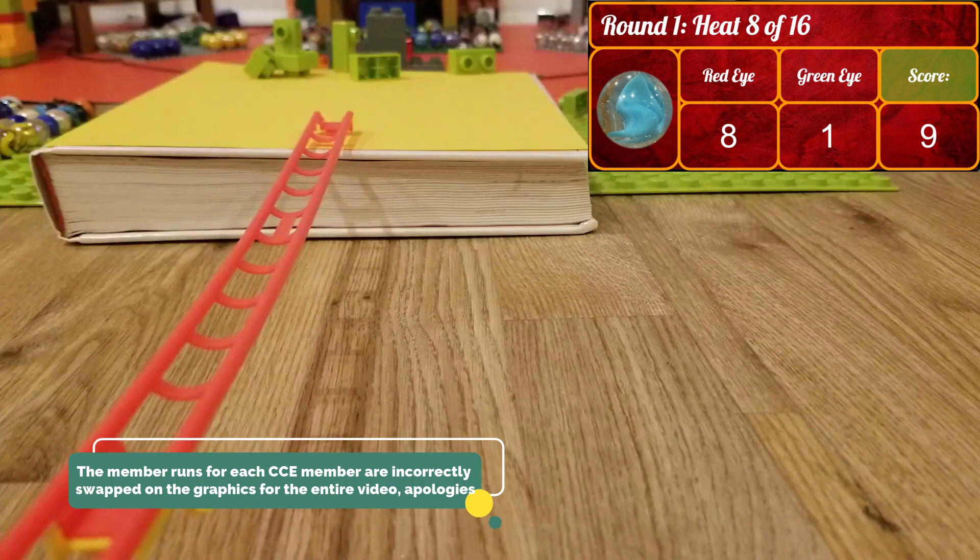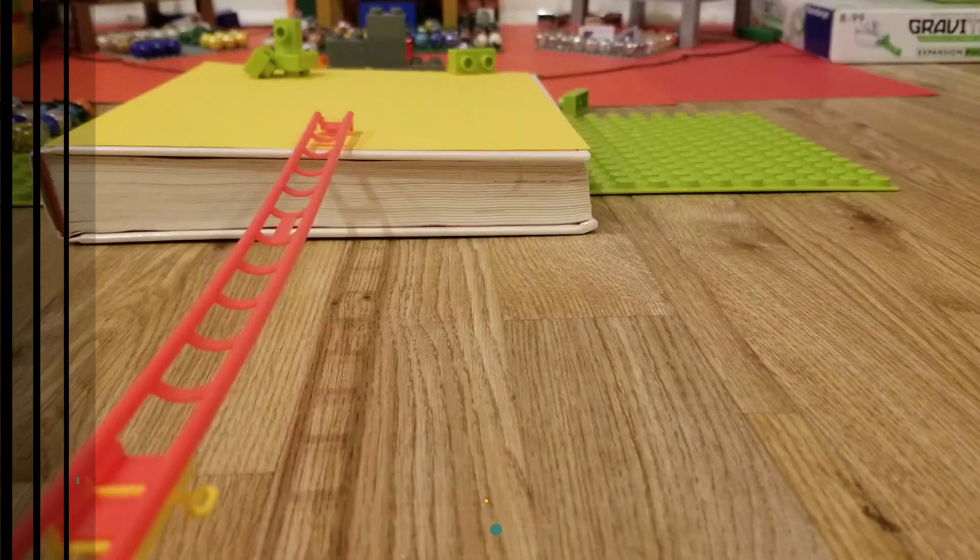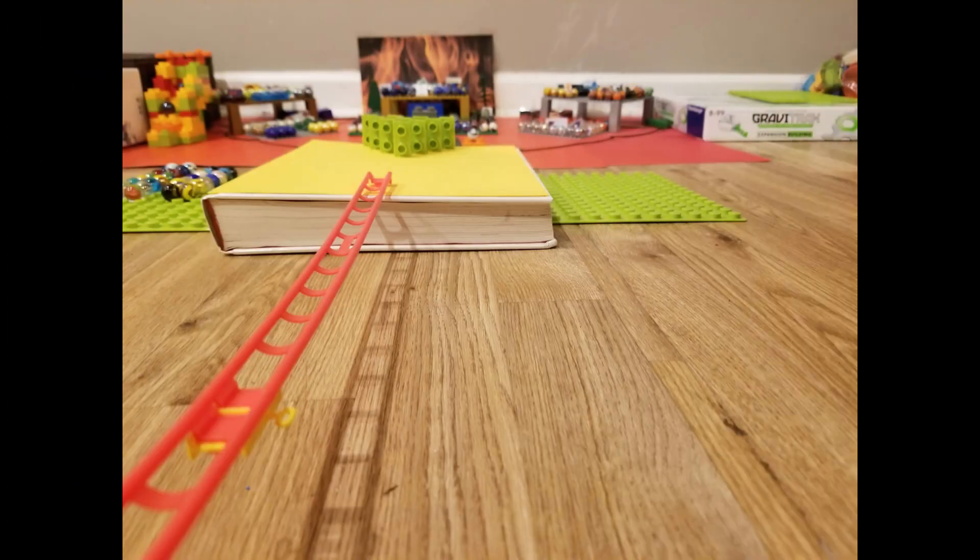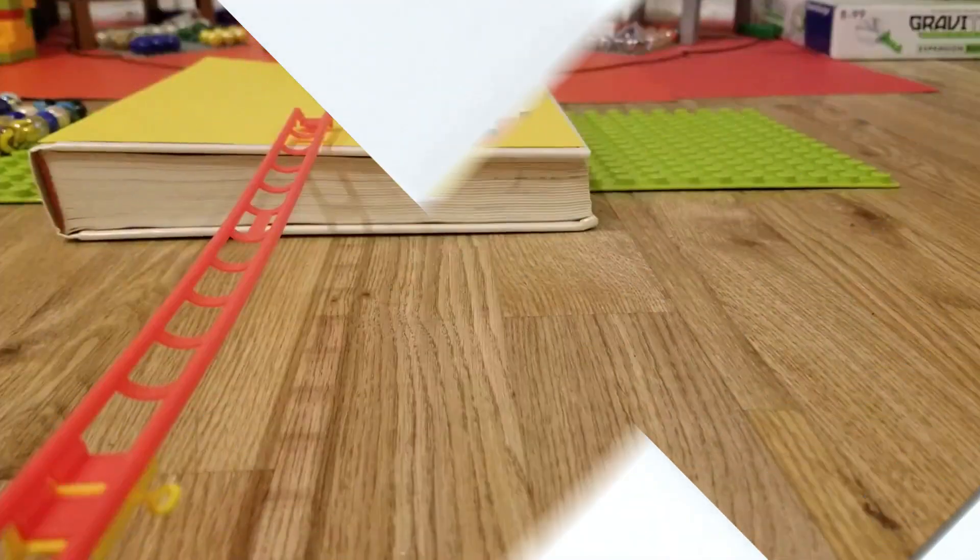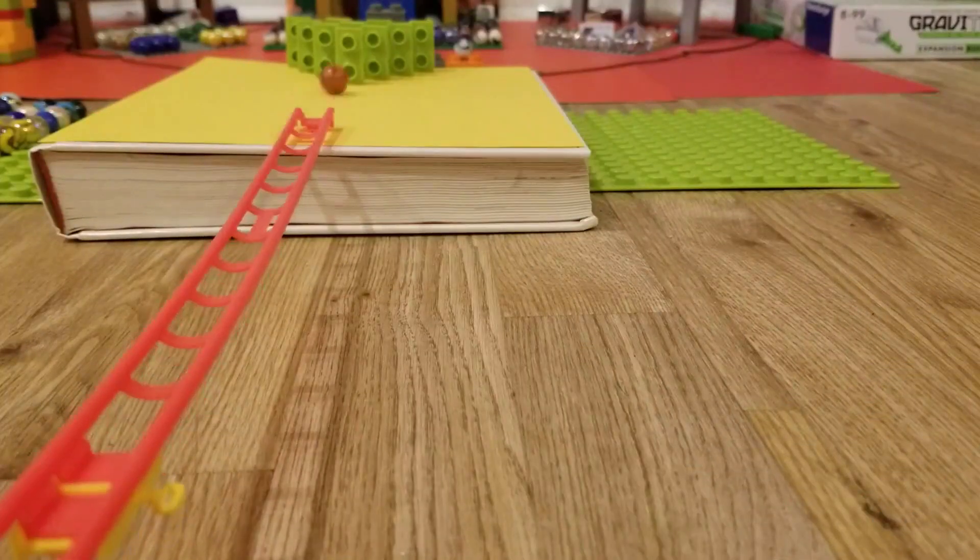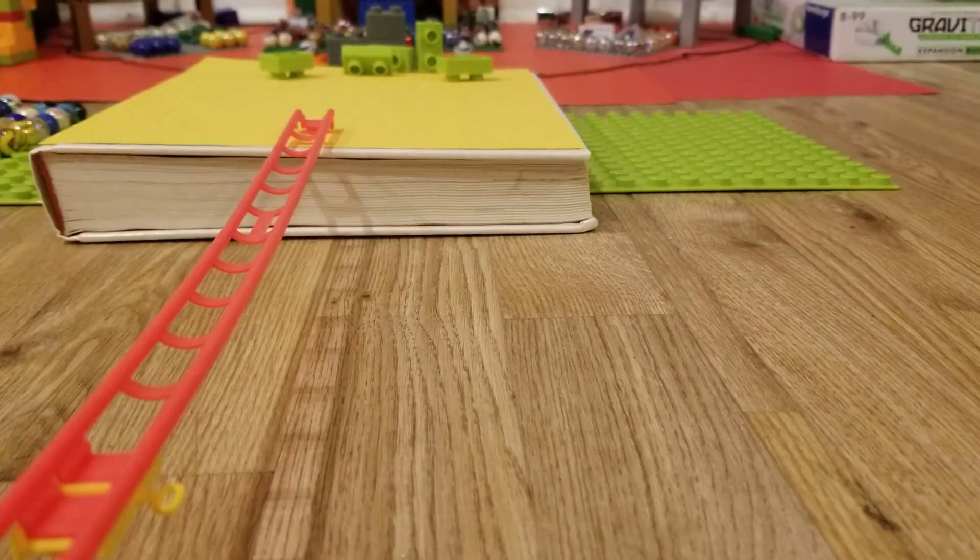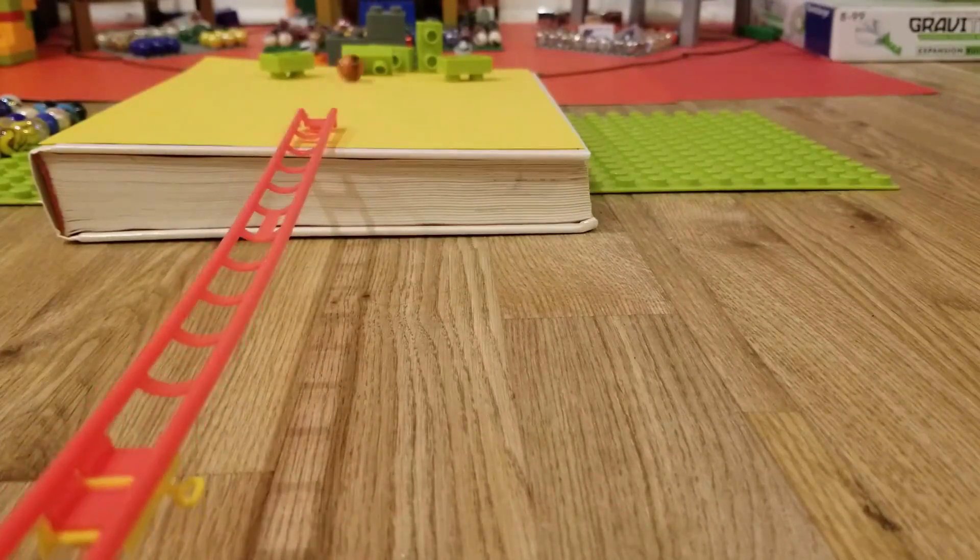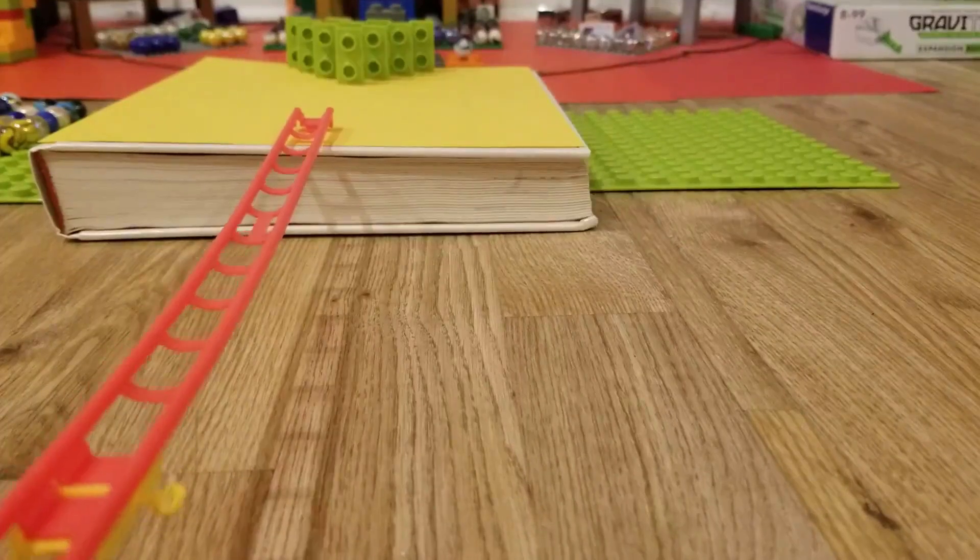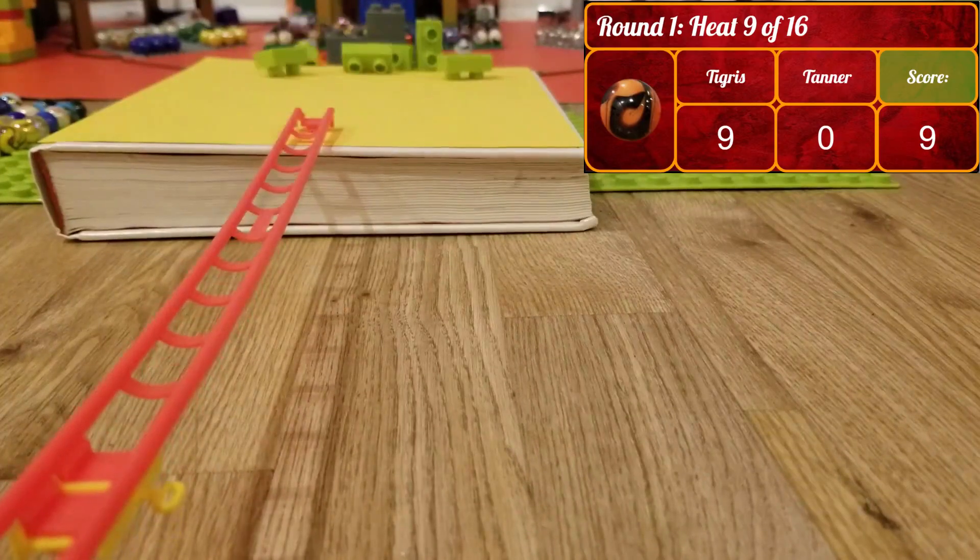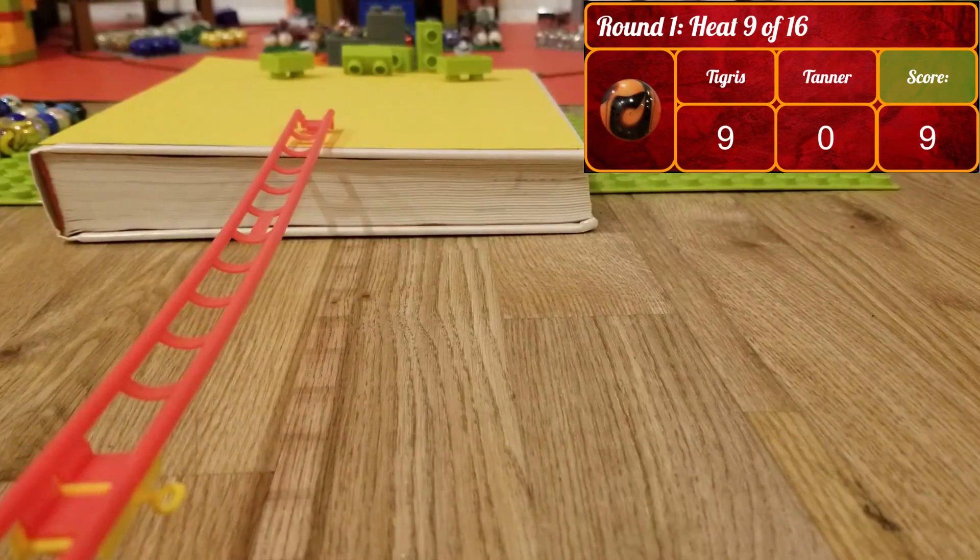Now, of course, unfortunately, on the graphics, the Chili Cat's Eyes members were swapped on all the graphics. So, apologies for that. But all the other teams, their graphics have been checked and are good. From the Bronze Tigers. Another good bowl by Tigris. Tigris puts up a nine for the Bronze Tigers. That's a good score.